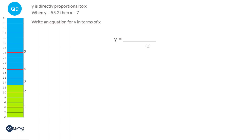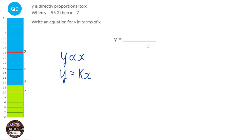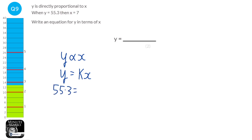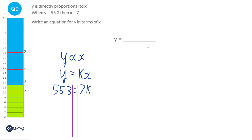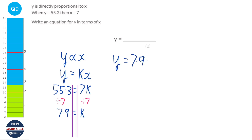When we say y is directly proportional to x, whenever x doubles, y doubles, and whenever x halves, y halves. We introduce a constant k so it becomes y equals kx. To find k, we feed in the given values: y is 55.3 and x is 7, giving us 55.3 equals 7k. Dividing both sides by 7 gives k equals 7.9. So the equation is y equals 7.9x.